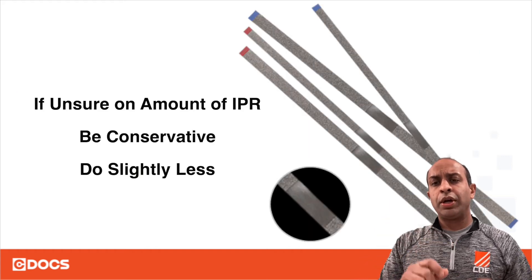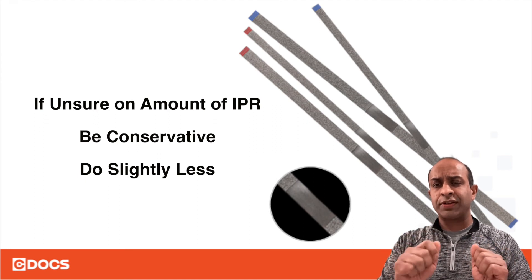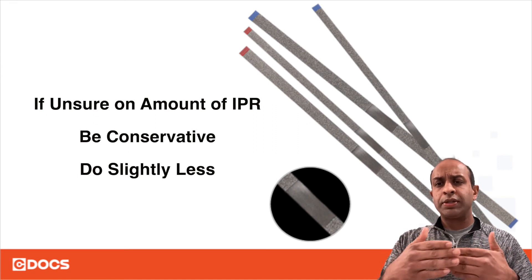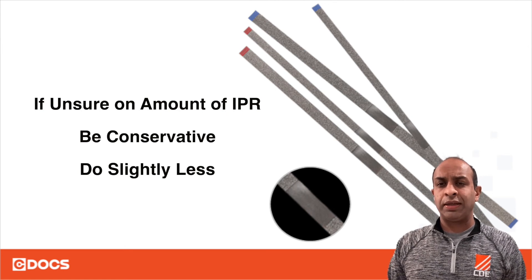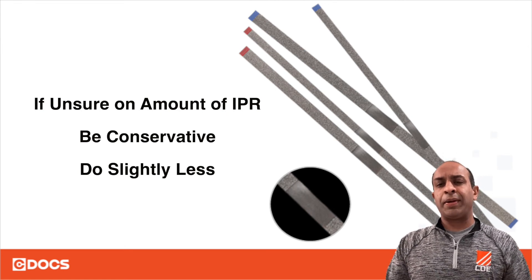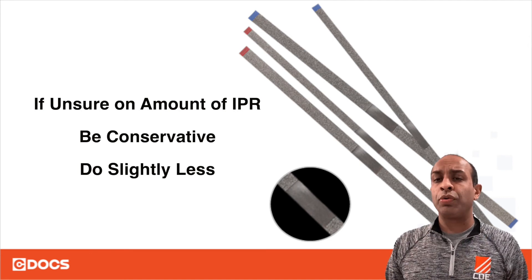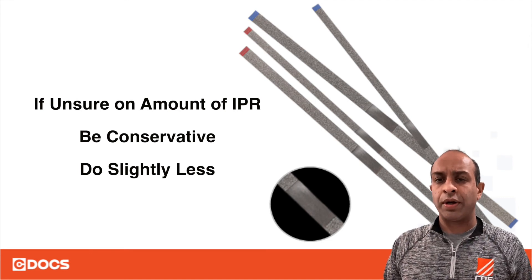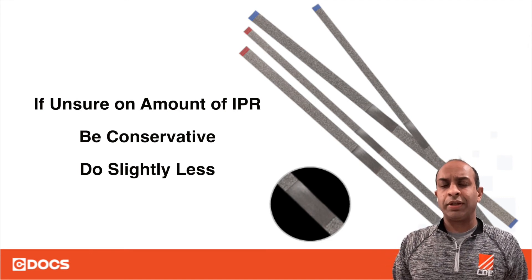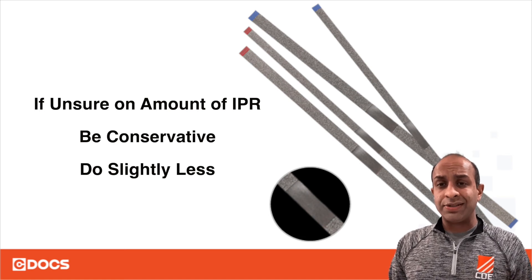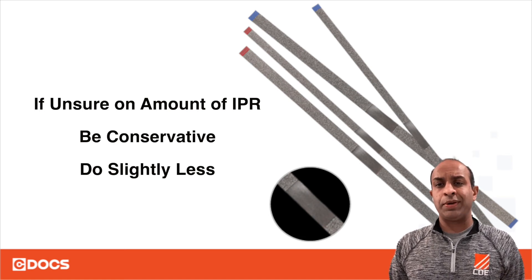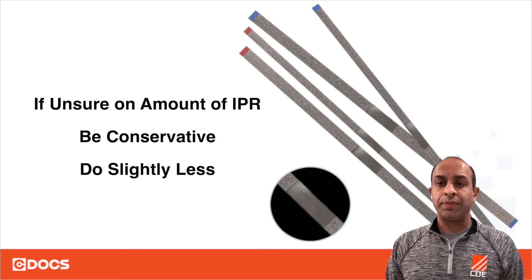As you go ahead and do the IPR, you're going to want to go back with the FlexView strip to round out whatever you have reduced in the enamel between those teeth, and that can end up increasing the total amount of IPR. So by underdoing it, you'll at least always be in the safe zone. It's a lot easier to go back and do additional IPR than it is to do tooth addition.